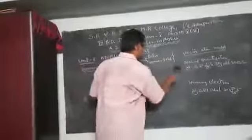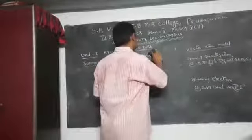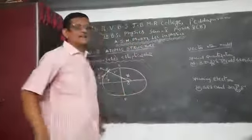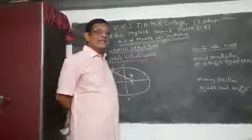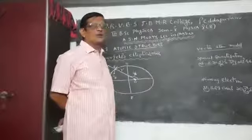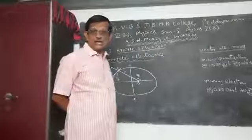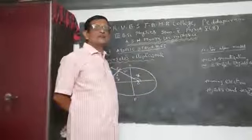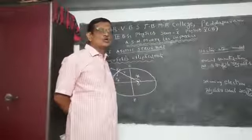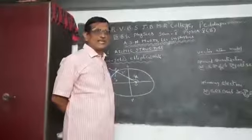According to Sommerfeld's theory, electrons revolve around the nucleus in elliptical orbits, same as planets revolve around the sun.